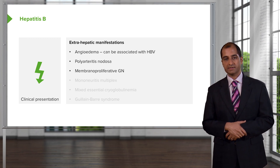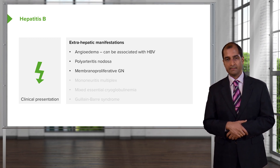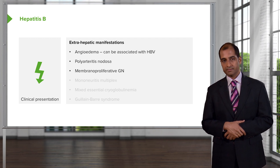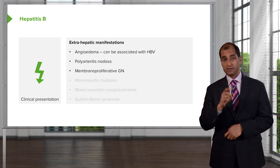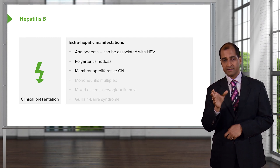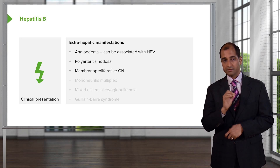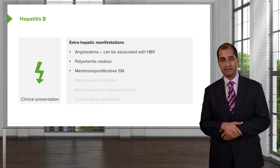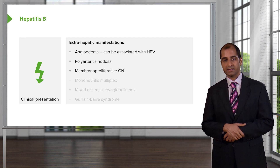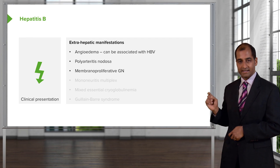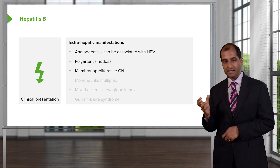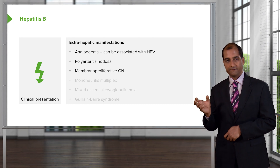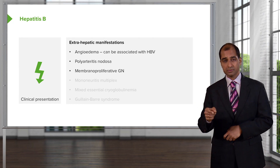There is also an association with MPGN — membranoproliferative glomerulonephritis. What does this mean? MPGN presents with both nephritic and nephrotic features. There might be hematuria, hypertension, massive edema, and greater than 3.5 grams of protein loss. Allow each one of these symptoms to give you information for the correct diagnosis.